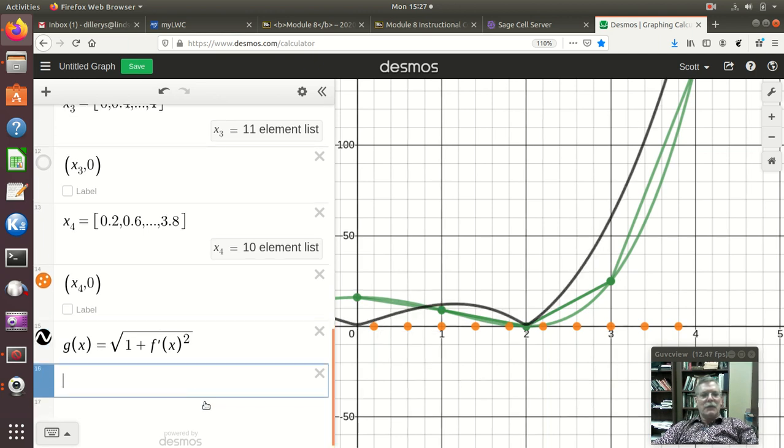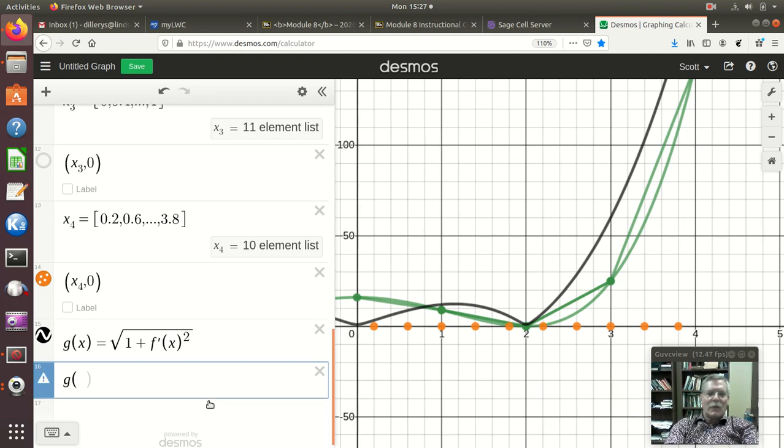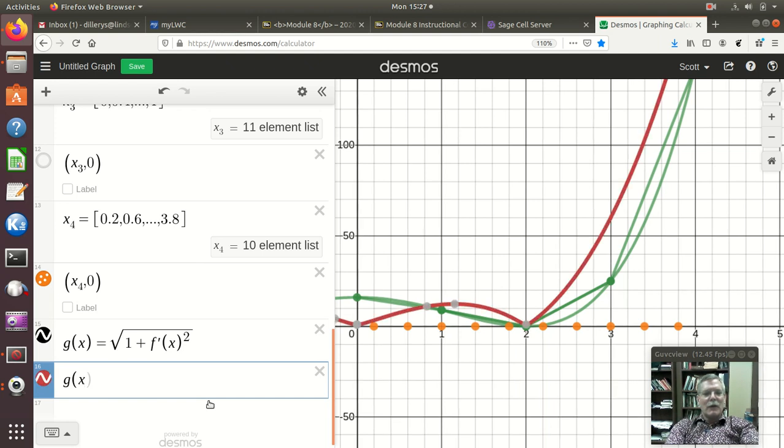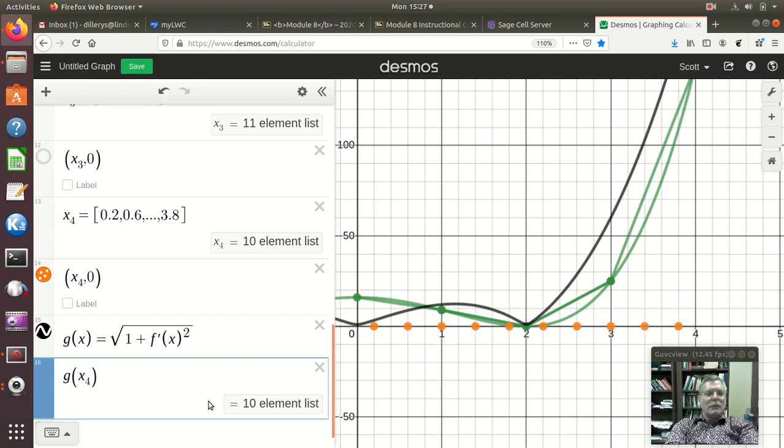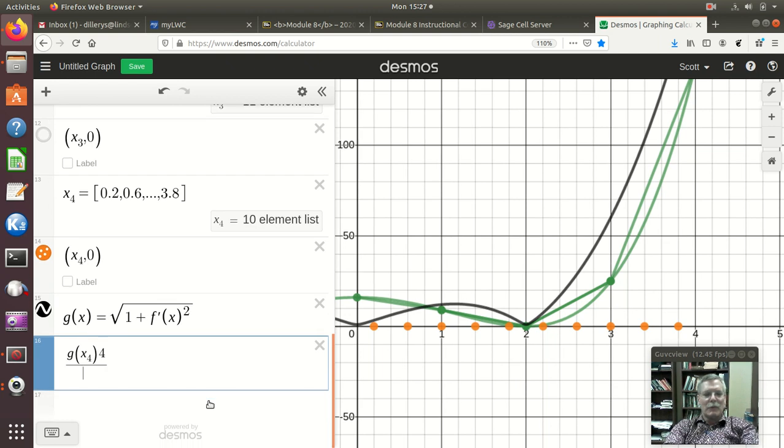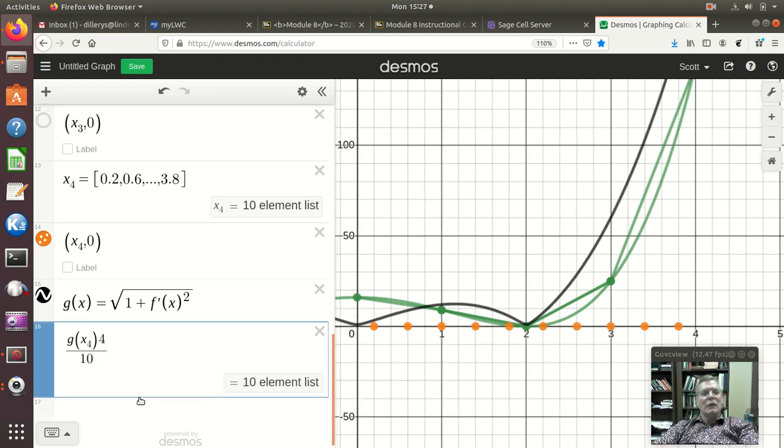And, so now I just need that value at my midpoint. So, X4 and times delta X. Well, I didn't write delta X anywhere. It was 0.4 or 4 over 10. So, I'm just going to write 4 divided by 10. And, there's a 10 element list.